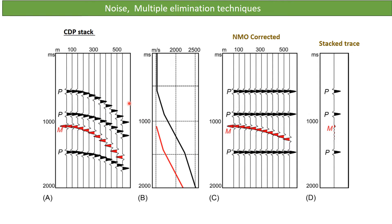In CMP stacking, we have a primary reflection event and a multiple event. Our objective is to eliminate the multiple. When we apply NMO correction, the reflected events are aligned to a straight line. When stacked, you get a single trace for the primary, while the multiple is out of phase and gets diminished. In the stacked section you get primary events and only a very feeble residual multiple, and our objective is to completely eliminate it from the seismic section.